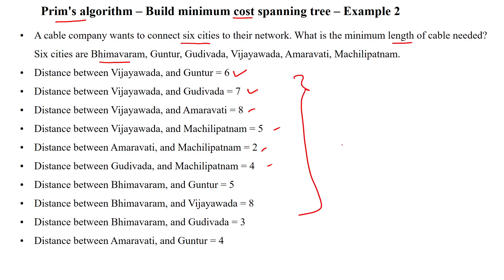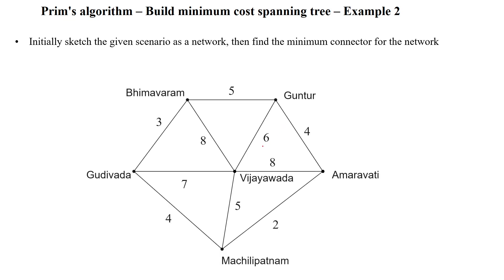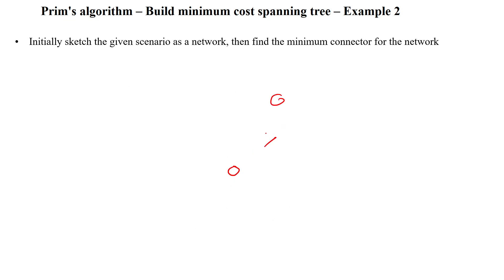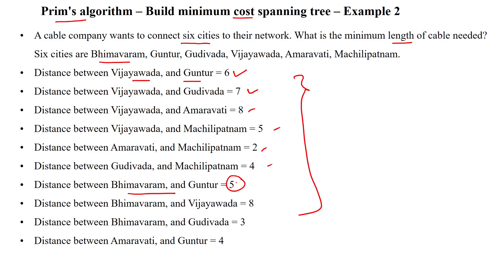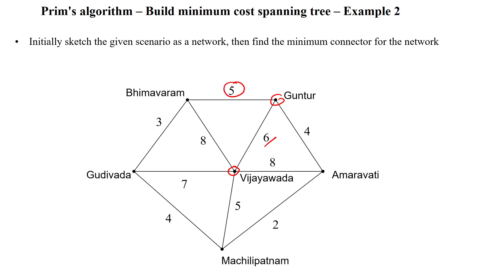Based on the problem statement, we have to establish a graph. The distance between Vijayawada and Guntur is 6, and the distance between Bhimavaram and Guntur is 5. After establishing the graph structure, we can implement Prim's algorithm to find the shortest path using a minimum cost spanning tree. Finding the minimum shortest path reduces the required cable length, so the company can decrease their expenses by decreasing the cable length for establishing the cable network.